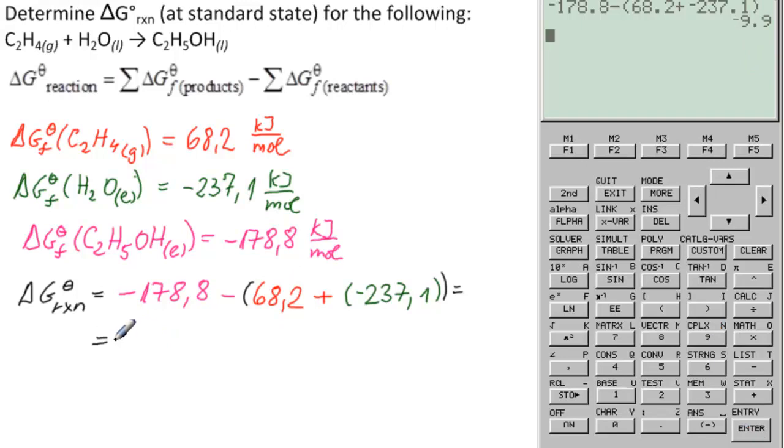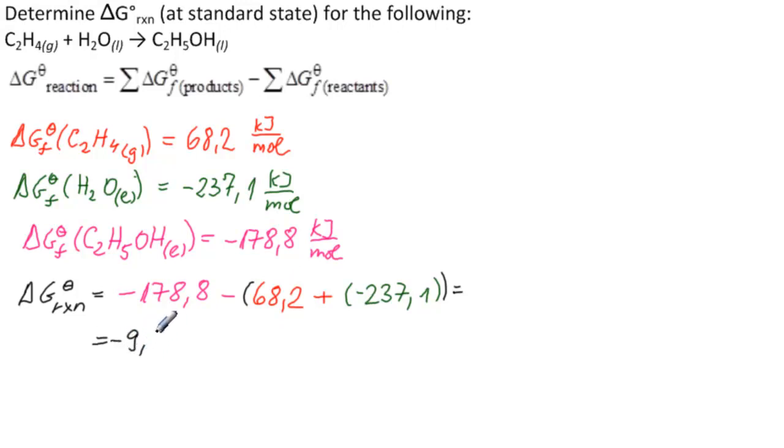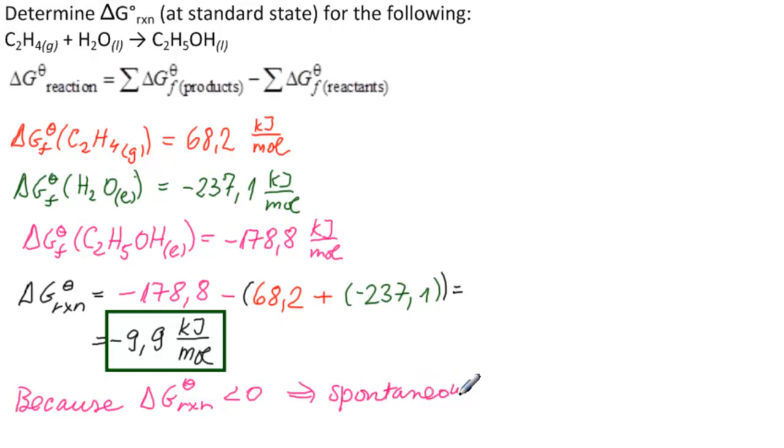Minus 9.9 kilojoules per mole. This is our answer. And because ΔG°rxn is less than zero, this is a spontaneous reaction.